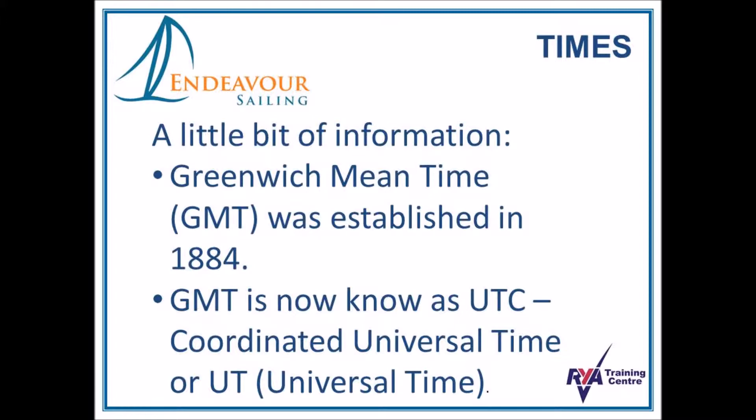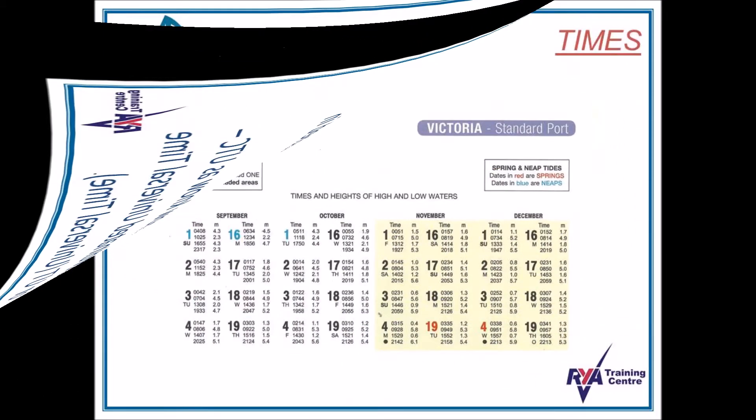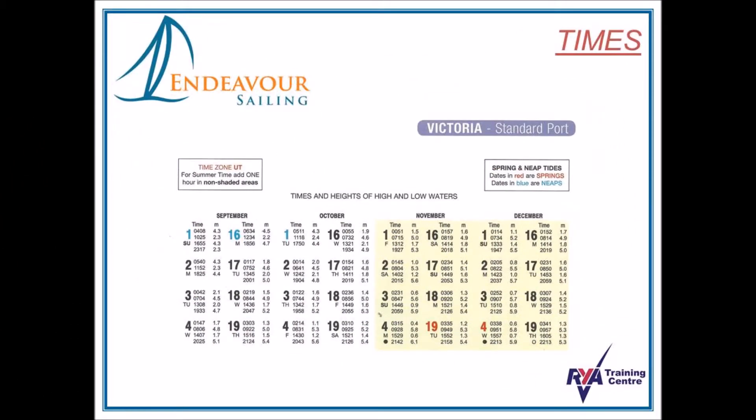So now let's see how this works. Here is an example of tidal data out of the RYA Training Almanac. And this appears, or is shown, as it does within other almanacs such as the Reeds Almanac.